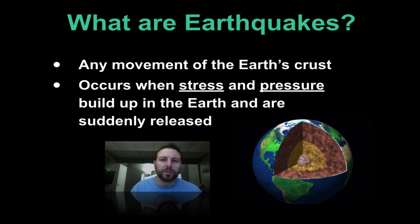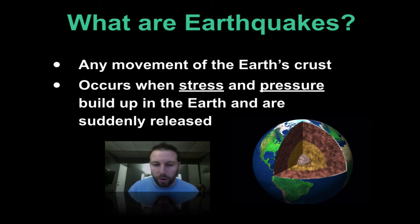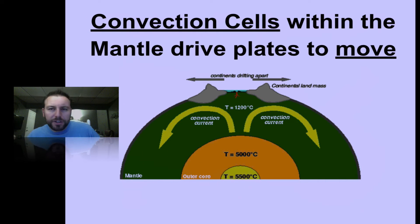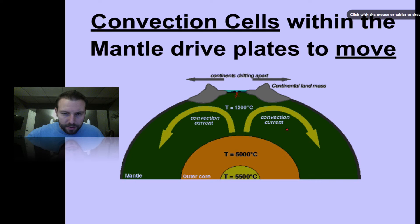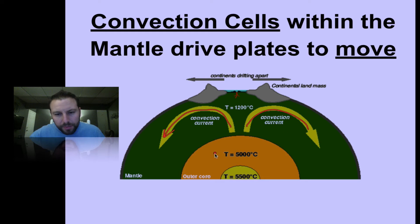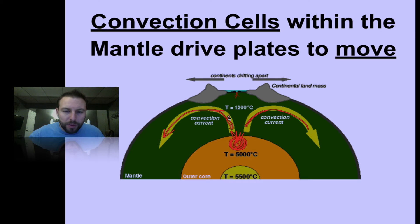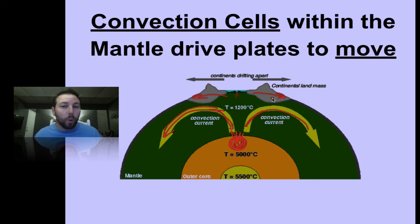Earthquakes are nothing more than any movement of the earth's crust. They occur when stress and pressure build up enough and then suddenly release when that rock or area can't hold that energy anymore. Convection cells within the mantle drive plates to move. Looking deeper within the earth, the material inside our mantle flows a bit because the inner core acts like a heat engine driving energy outward, causing hot spots and cooler spots. This creates convection cells, and friction will cause them to drag and pull these lithospheric plates apart, or in some cases together.